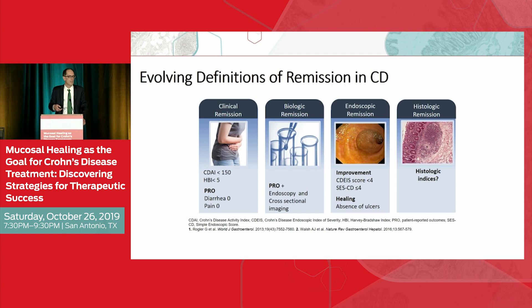You may hear at this meeting the term PRO — patient-reported outcomes. In Crohn's disease, we now distill down to two symptoms: diarrhea and pain — PRO-2. Patient-reported outcomes in ulcerative colitis are bleeding and diarrhea. So if you hear PRO-2 at the podium, that's what we mean.